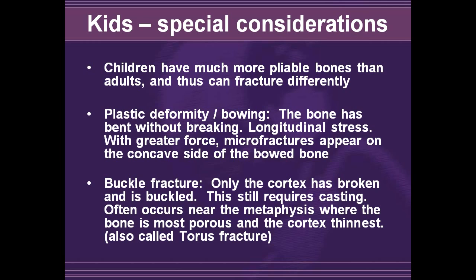Kids require special consideration when looking at fractures. Children, as they are growing, have much more pliable bones than adults, and thus damage to the bones may appear different. The first type is plastic deformity or bowing deformity — in this case, bone bends without actually breaking, usually due to longitudinal stress, and microfractures may appear on the concave side. A buckle fracture means only the cortex has broken and is not broken through like in adults, but is more buckled. It still requires casting and most often occurs near the metaphysis, where the bone is most porous and the cortex is thinnest — this is usually called a torus fracture.